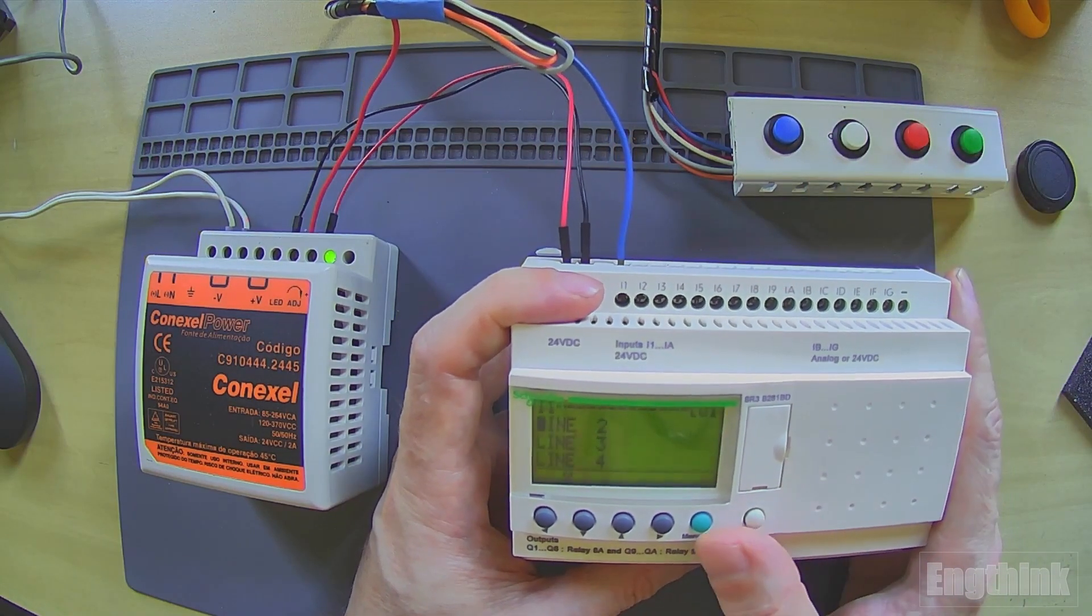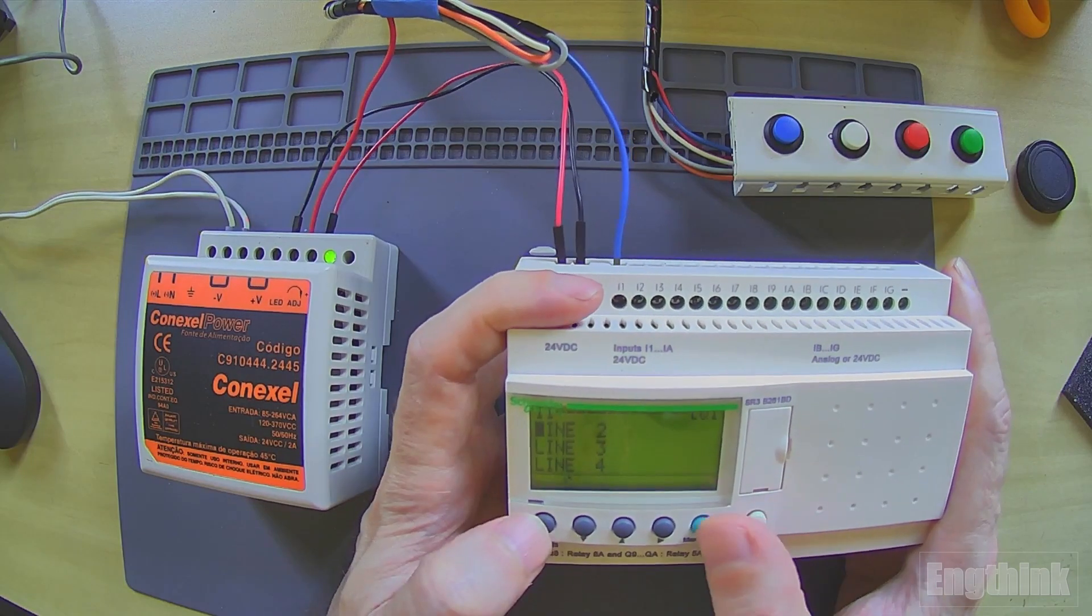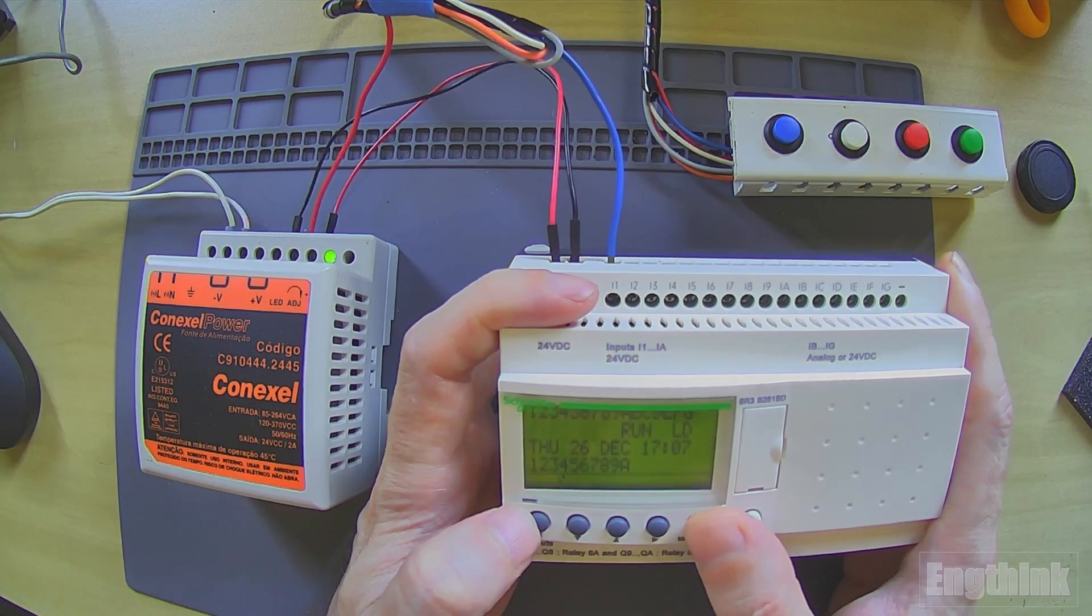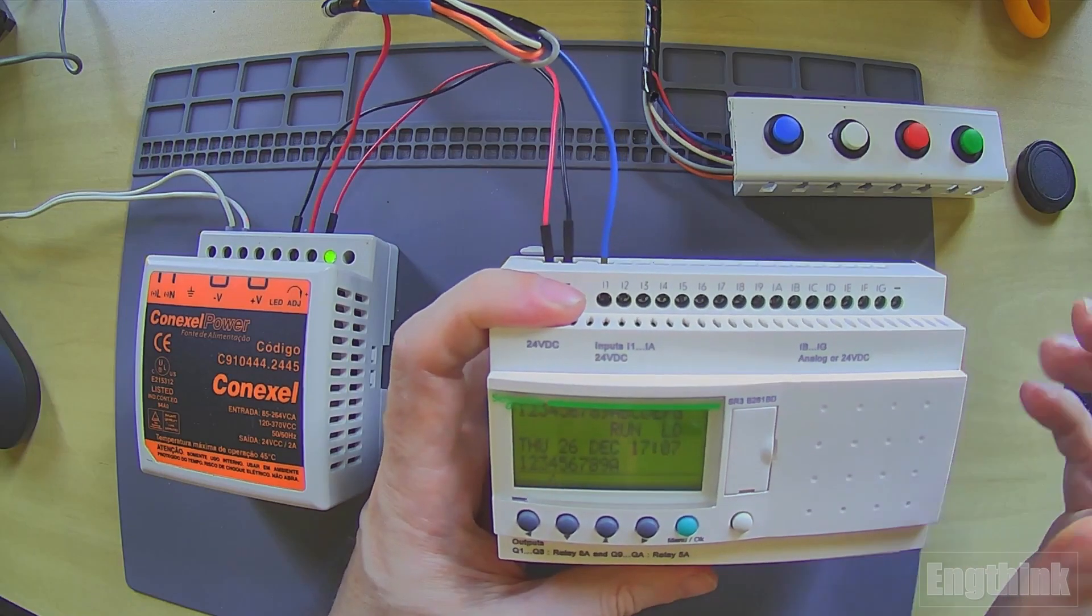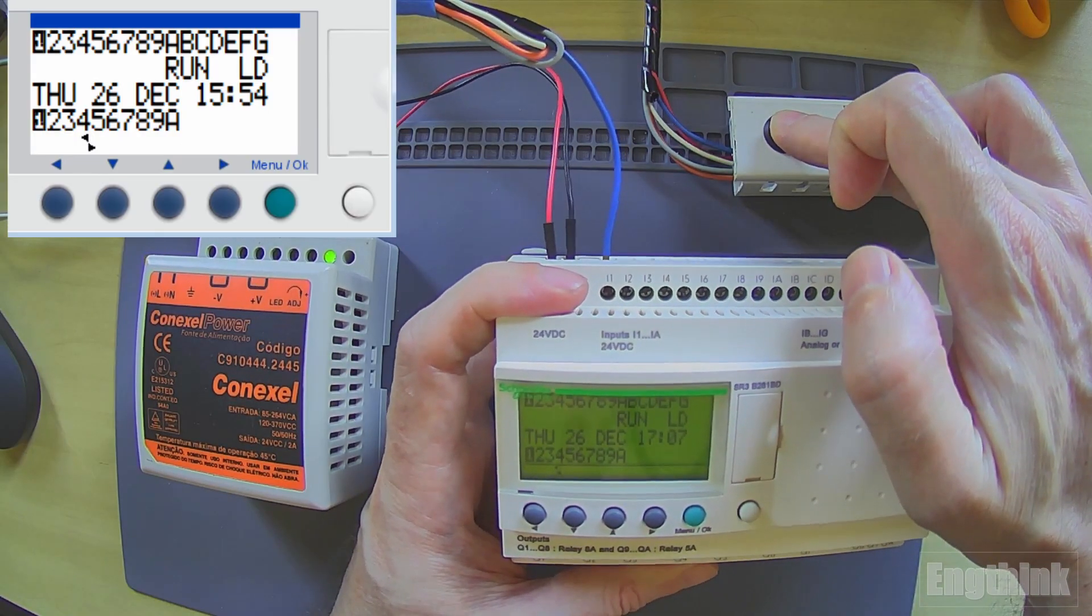The first thing we need to do to change the program is go back to the main menu. Here we can see as well when I press I1, we have Q1 activated.